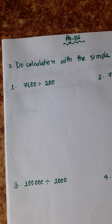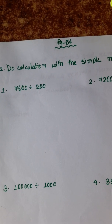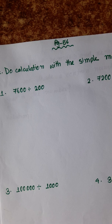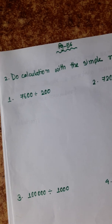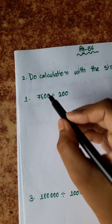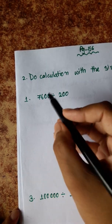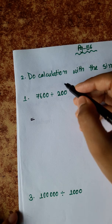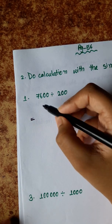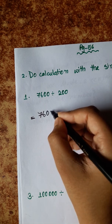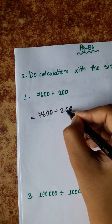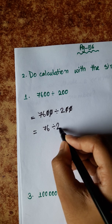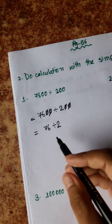Our next question is to do calculation with the simple method. We have to solve all these sums in a simple method. So let's start with this one: 7600 divided by 200. We can just cut these zeros. So 7600 divided by 2000 — cutting the zeros — this is 76 divided by 2.